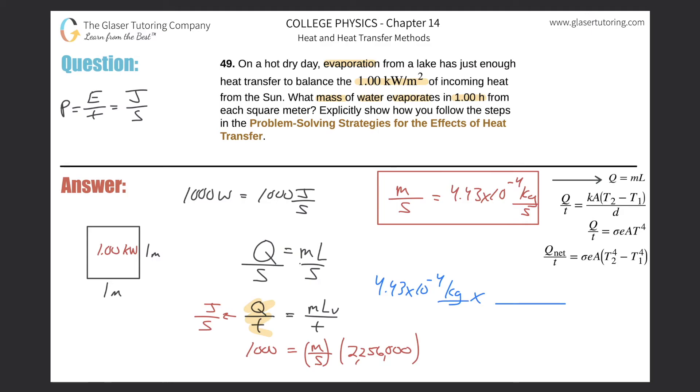So this is the amount of mass every single second that is being evaporated. Now I need to convert seconds into hours. I can do that in one step—there's 3600 seconds in one hour. When I take that value and multiply it by 3600, it's now going to be about 1.59, so about 1.60 kilograms per hour.